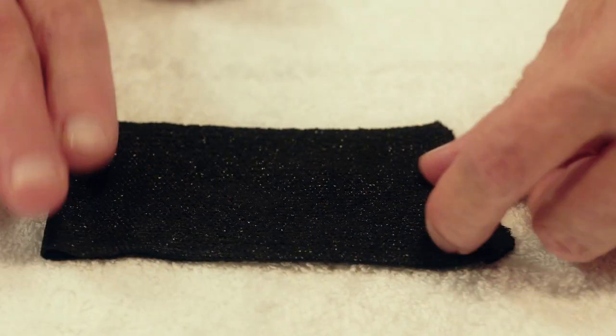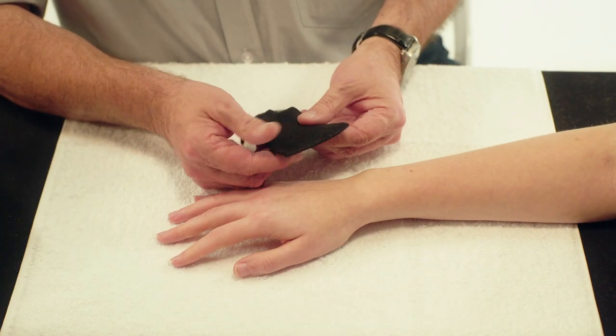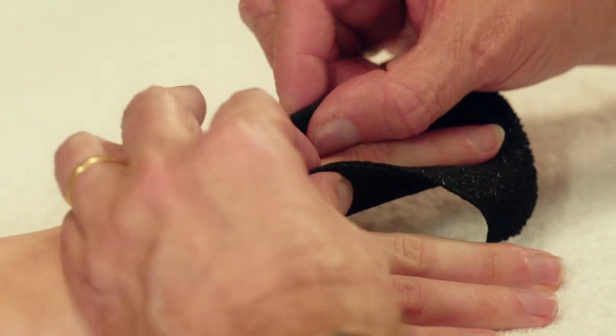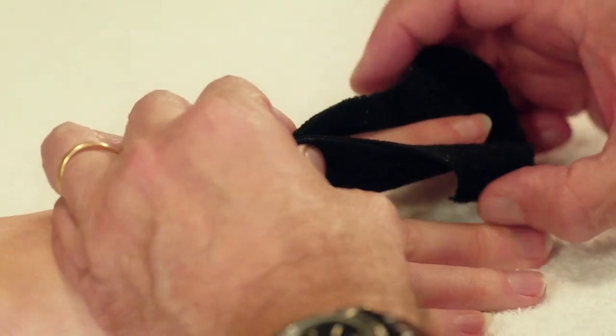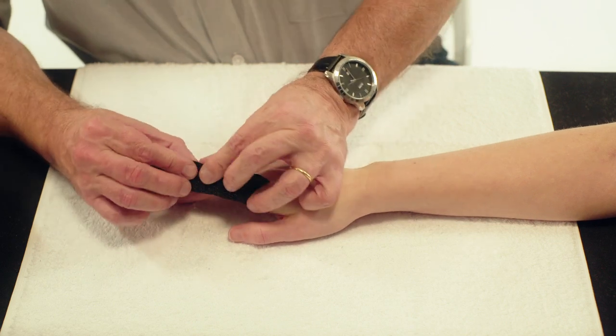Stretch it slightly. Place the orthicast on the palmer side of the finger. Pinch it together on the dorsal side over the entire length of the finger.